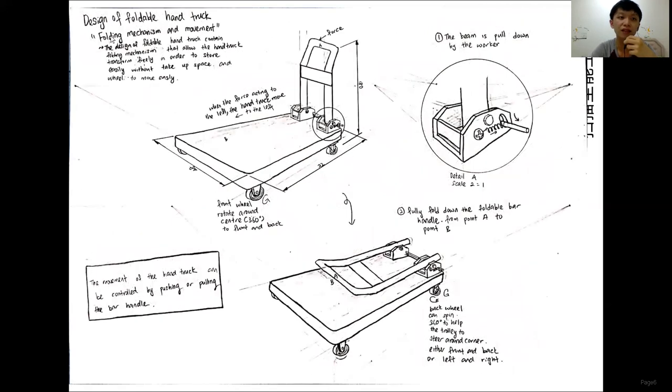Next is the folding mechanism and movement. First, the beam is pulled down by the brackets and the bar handle is fully folded down from point A to point B. The movement of the hand truck can be controlled by pushing or pulling the bar handle.